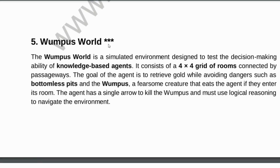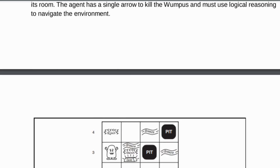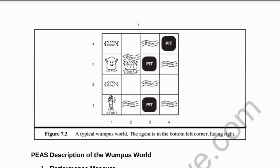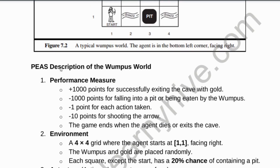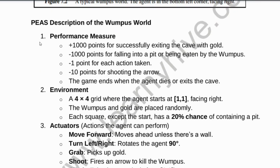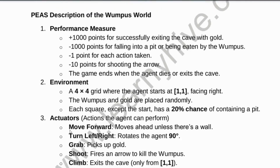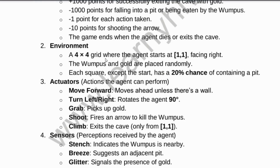Fifth question: what is Wumpus world? Provide an explanation of Wumpus world along with its diagram and description. Also cover the PEAS description — that is, performance measure, environment, actuators, and sensors.